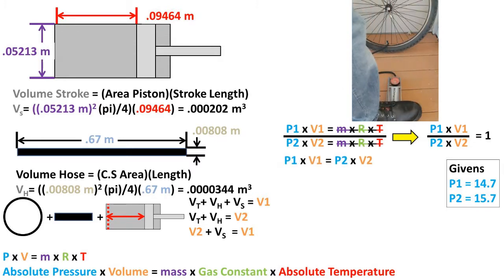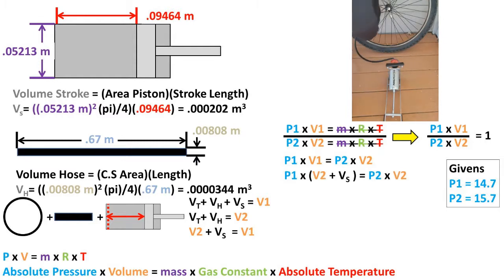We can multiply both sides by pressure 2 and volume 2. We are left with P1 times V1 equals P2 times V2. Now we want to get the formula down to one unsolved variable. So to do so, we can plug in what we found V1 to be equal to, which is V2 plus volume of stroke, into the equation.